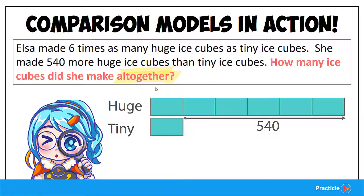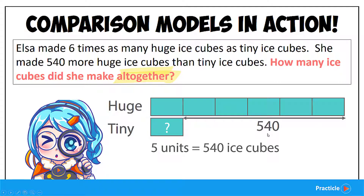From our model, we can tell that 5 units represents 540 ice cubes, correct? So let's make use of that to find the value of one unit.